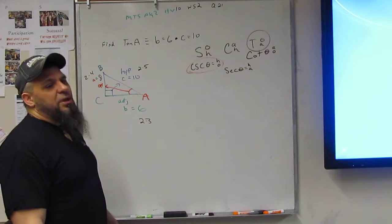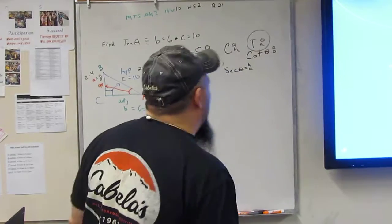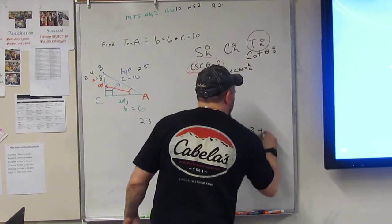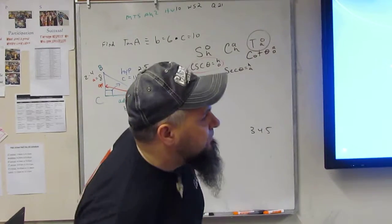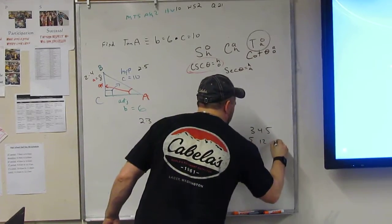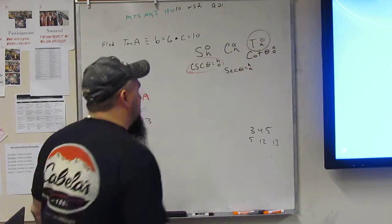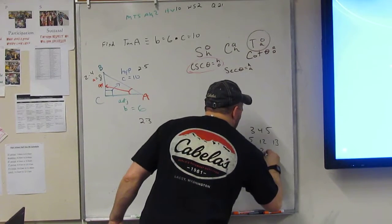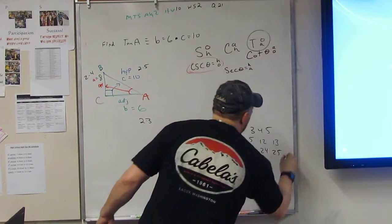And remember all the triples are 3, 4, 5. 5, 12, 13. And 7, 24, 25.